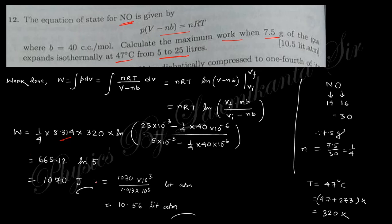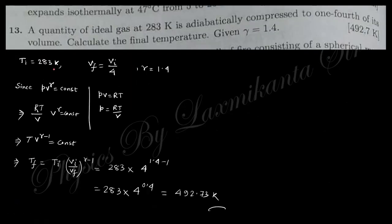A quantity of ideal gas at 283 K is adiabatically compressed to one-fourth of its volume. Using the adiabatic relation TV^(γ-1) = constant, the final temperature T_f = T_i·(V_i/V_f)^(γ-1) = 283·(4)^(γ-1). Substituting the value of γ gives the final temperature.